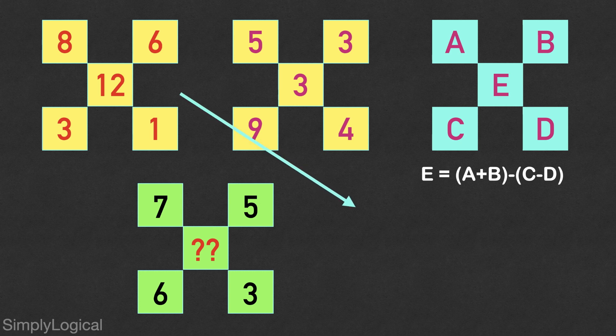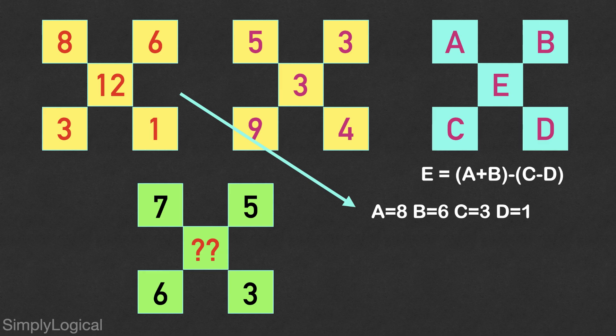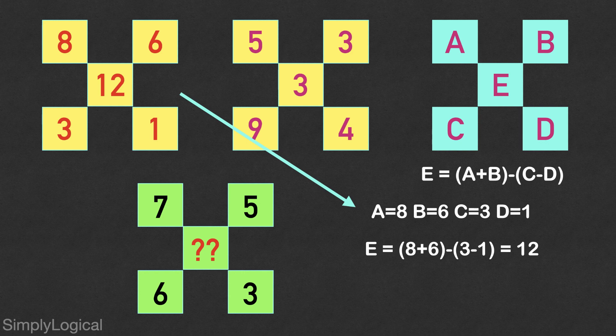Let's consider figure 1. So in figure 1, A equals 8, B equals 6, C equals 3 and D equals 1. According to the logic, the expression becomes 8 plus 6 minus of 3 minus 1, which is equal to 14 minus 2, which is equal to 12, which is the value of E in the first figure.